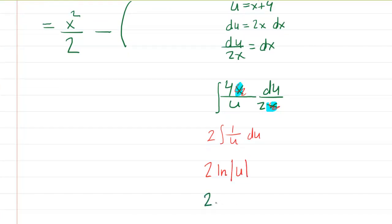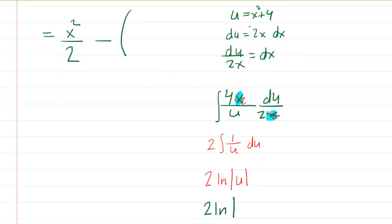And then you integrate and you get 2 times the natural log of the absolute value of u. And then you just go back and reinsert what you had substituted for u. We had let u equal the x squared plus 4. So that completes the second integral. We can put that in right here.